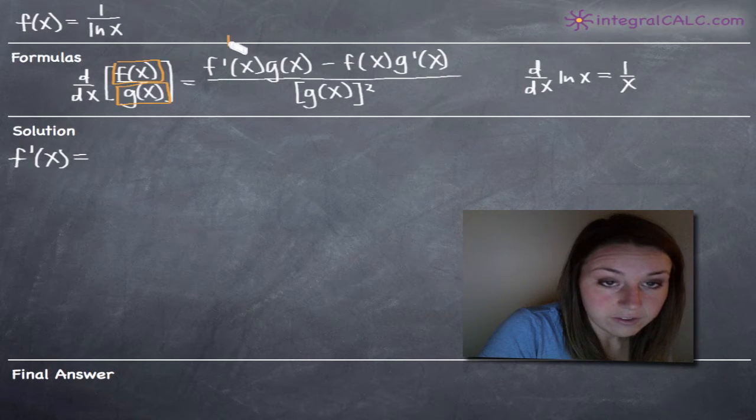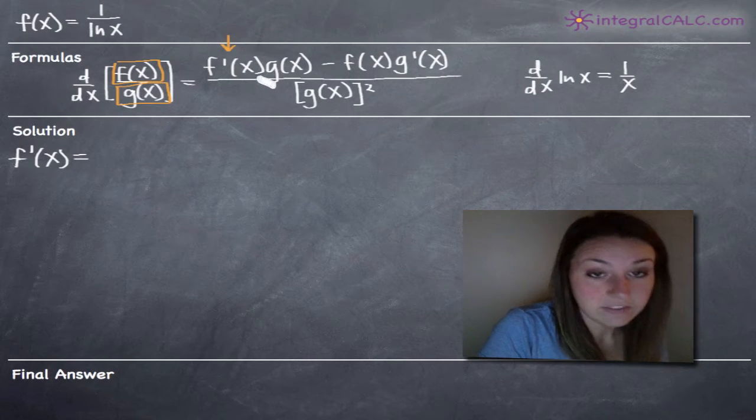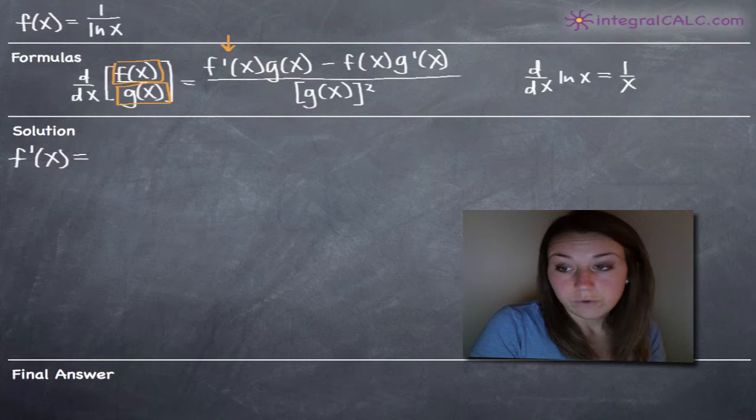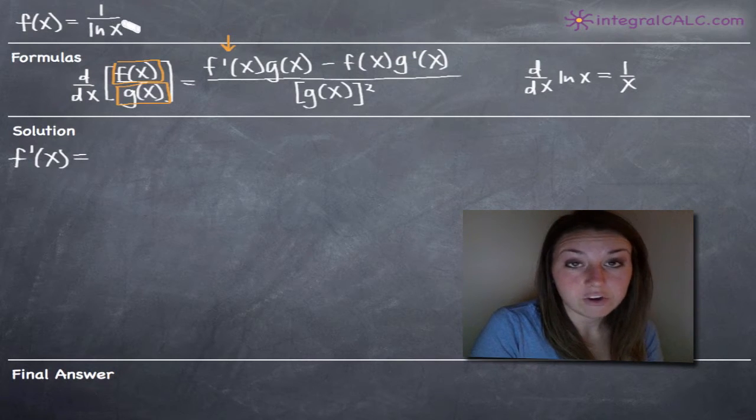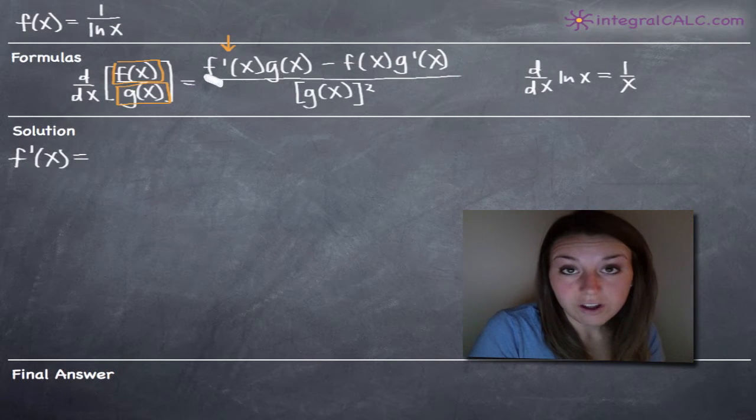Our formula tells us that the first thing we need is the derivative of our numerator. The derivative of our numerator is 0 because our numerator is 1 which is a constant, and the derivative of any constant is 0.